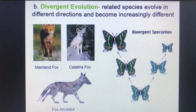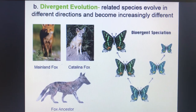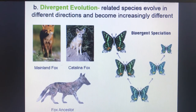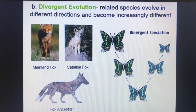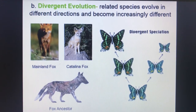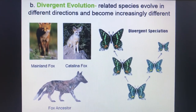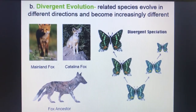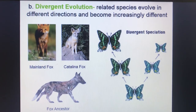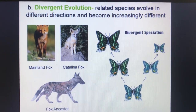Another type of evolution is known as divergent evolution — 'di' meaning two in Latin. A fox ancestor eventually gave rise to the mainland fox, and some of those mainland foxes got caught on a seaweed rack and were taken out to Catalina Island, where they became a whole new species known as the Catalina fox. So one relative eventually forms into two, very similar to disruptive selection.